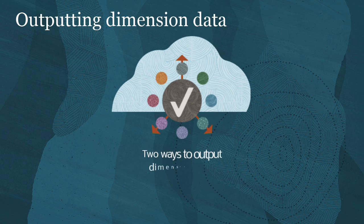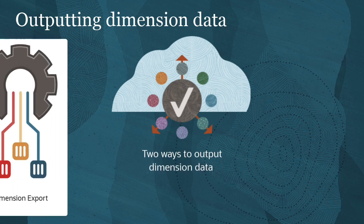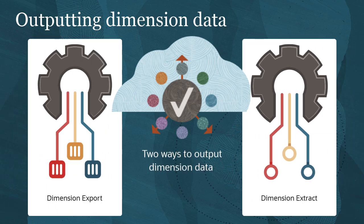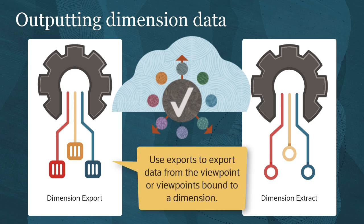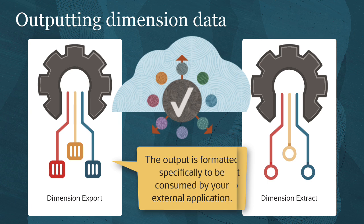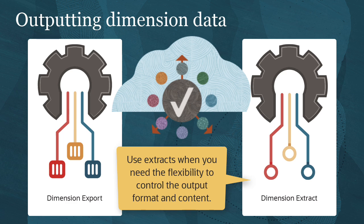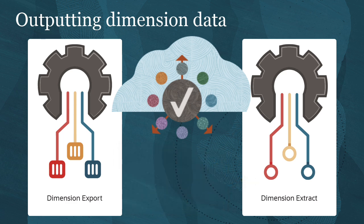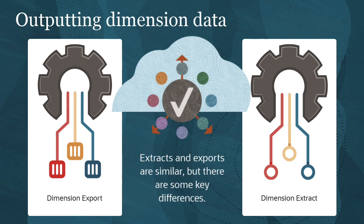Enterprise Data Management gives you two ways to output your dimension data: dimension exports and dimension extracts. Use exports to export data from the viewpoint or viewpoints bound to a dimension. The output is formatted specifically to be consumed by your external application. Use extracts when you need the flexibility to control the output format and content. Extracts and exports are similar, but there are some key differences.